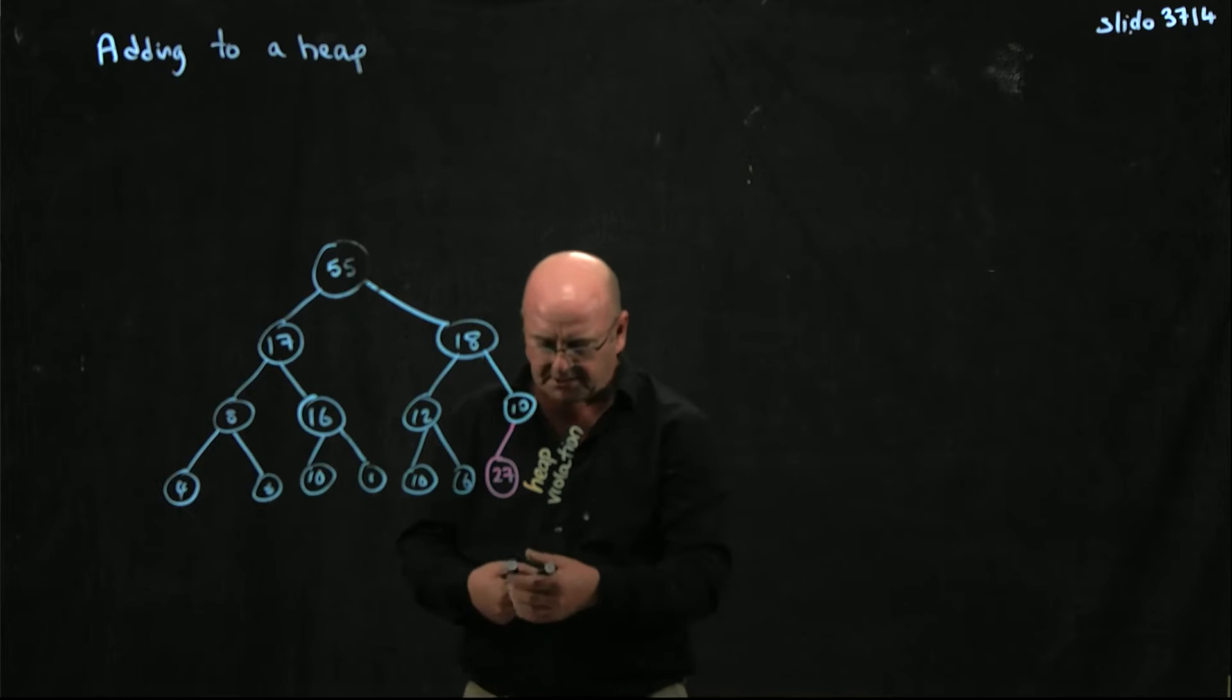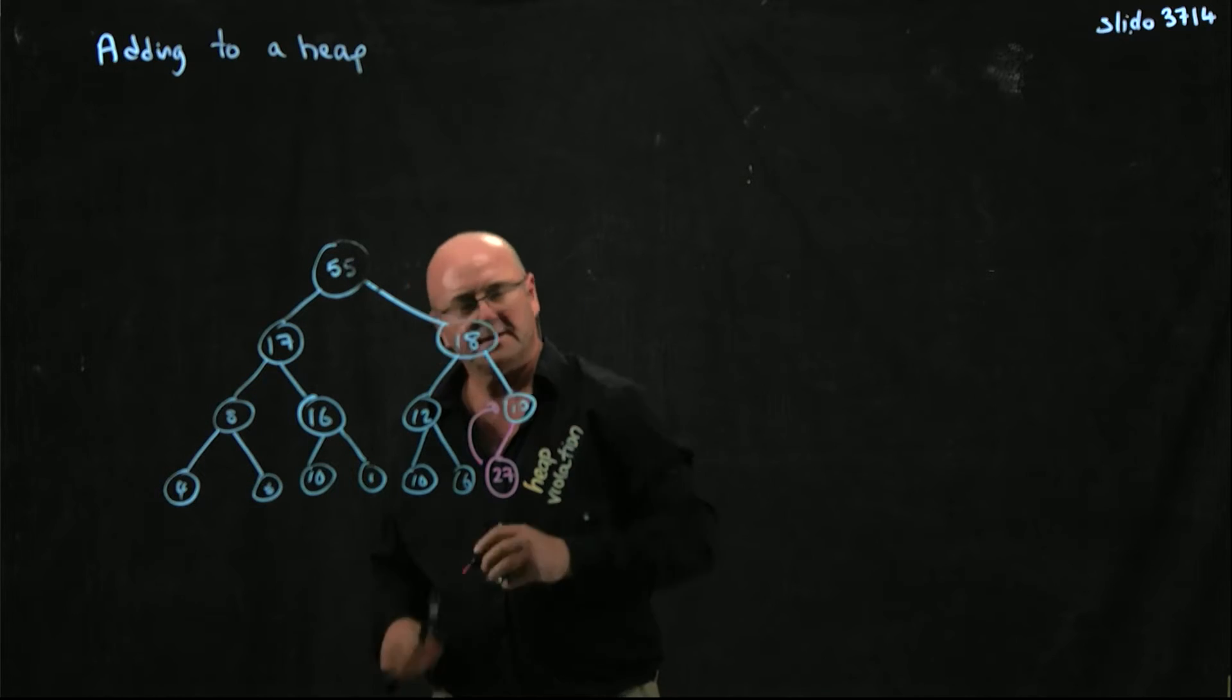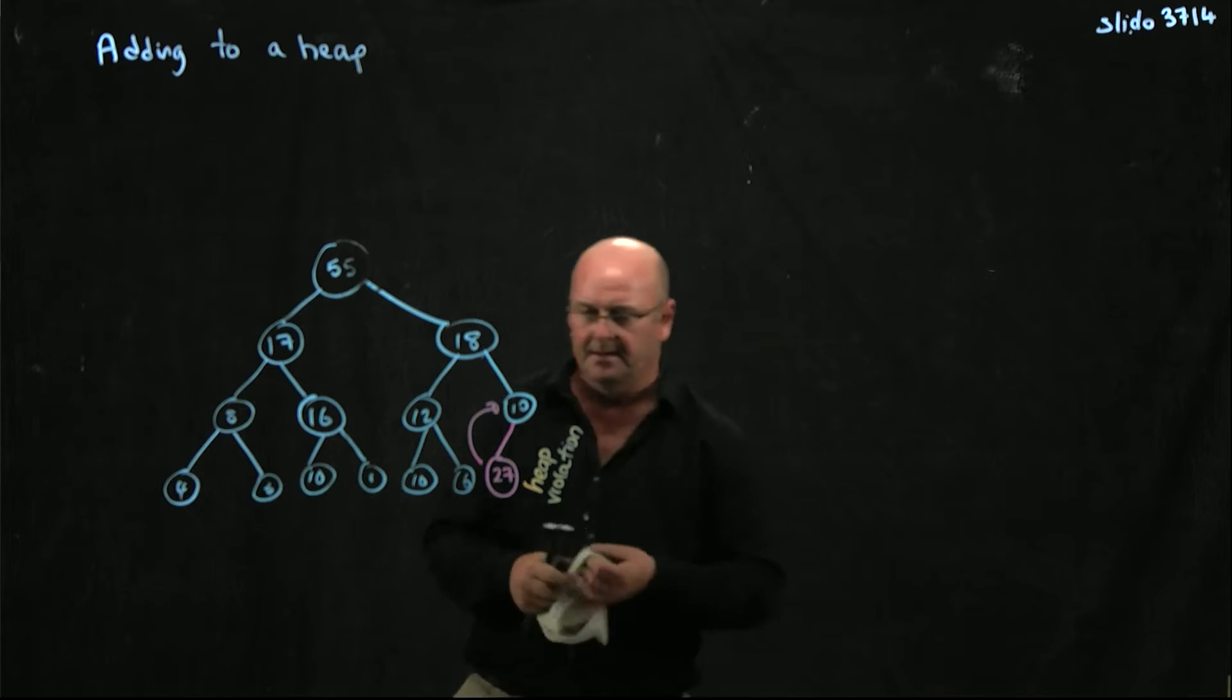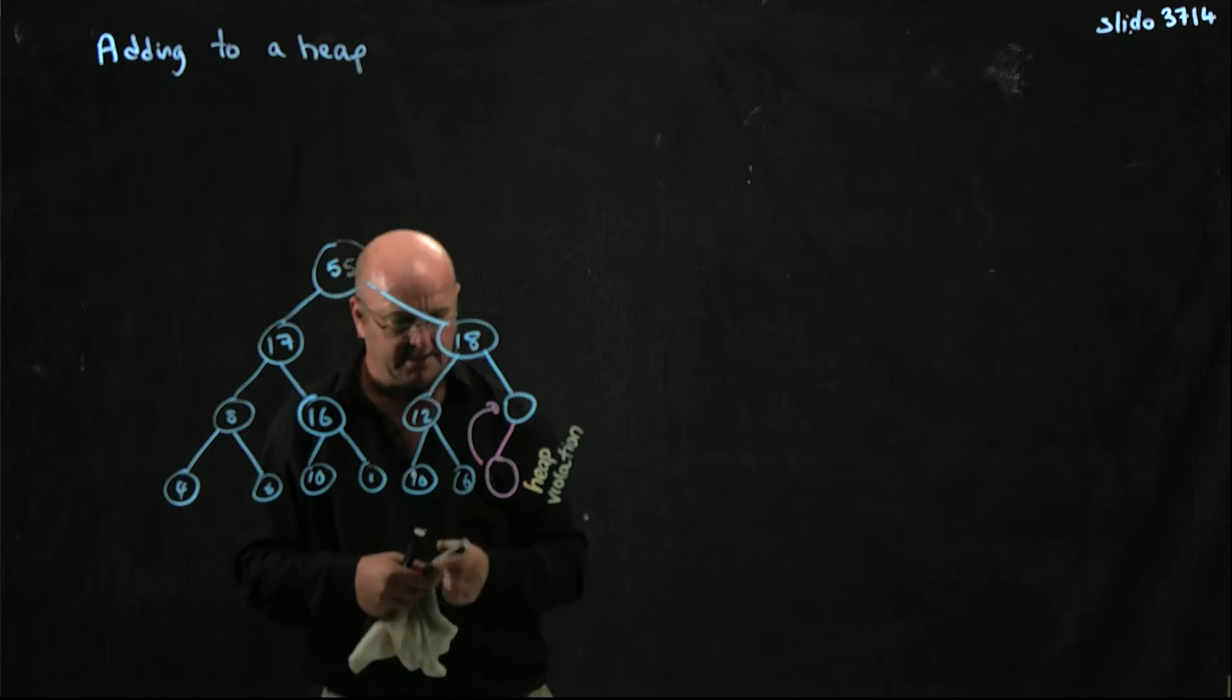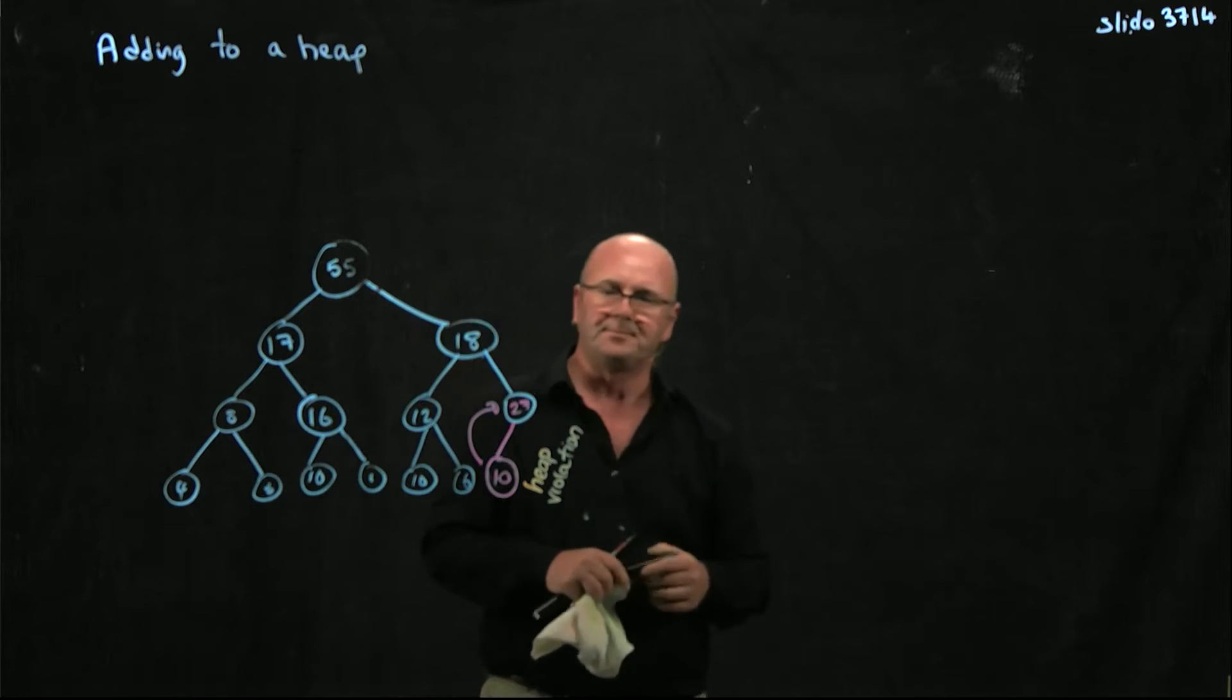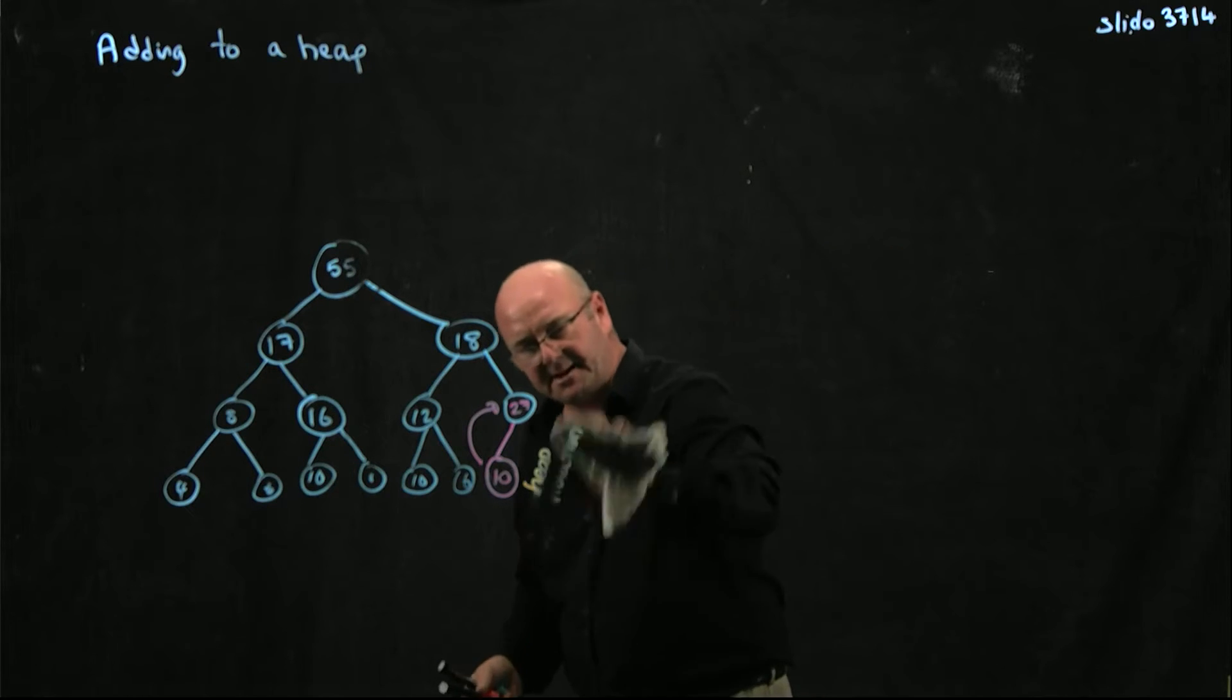So the way that I solve that is that I swap the 27 and the 10. So I swap out the 27, and I swap out the 10. 27 moves up, 10 moves down. That's pretty good. I've fixed that heap violation.